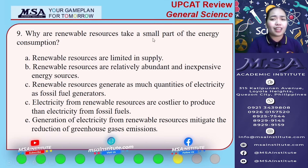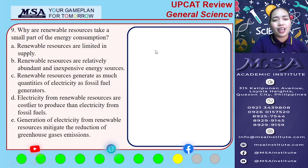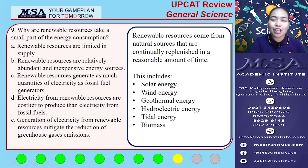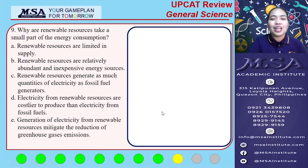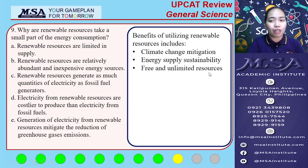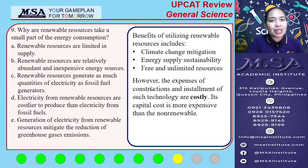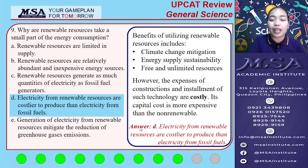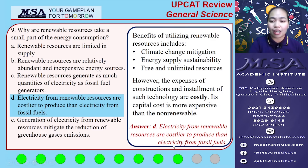Number nine: why do renewable resources make up only a small part of energy consumption? Renewable resources come from natural sources that are continually replenished in a reasonable amount of time, such as solar energy and wind energy. The benefits include climate change mitigation, energy supply sustainability, and free and unlimited resources. However, the expenses of construction and installation of such technology are costly — the capital cost is more expensive than non-renewables. The answer for number 9 is letter D: electricity from renewable resources is costlier to produce than electricity from fossil fuels.